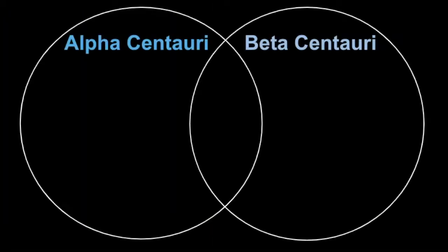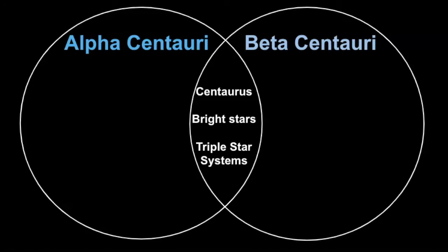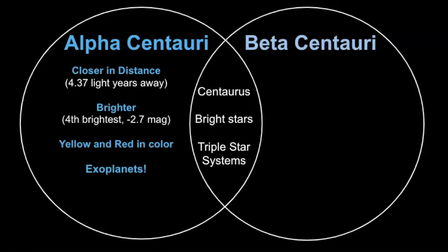In this section we'll use a Venn diagram to show the similarities and differences between the two. Starting with how they're similar: they're both in the constellation Centaurus, they're both very bright stars — in the top 15 brightest stars in the sky — and they're both triple star systems. Alpha Centauri is closer in distance at only 4.37 light years away. It's also brighter, classified as the fourth brightest star in the sky with a magnitude of negative 0.7. Remember, a magnitude in the negative value is brighter than a positive one — that inverse relationship with magnitude.